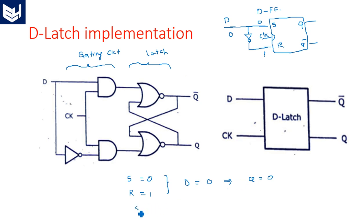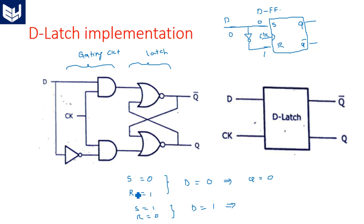The second case is S equal to 1 and R equal to 0, which happens when D is equal to 1. When D equals 1, that gives S equals 1 and R equals 0 because of the inverter. S equal to 1 means set, so the output Q is equal to 1. These are the two possible cases in D Latch implementation.